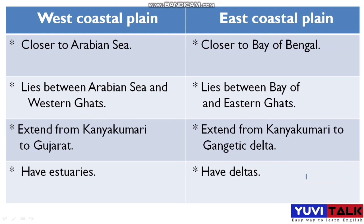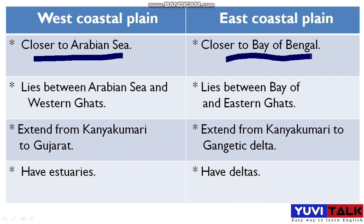The next question is: what is the difference between the West Coastal Plain and East Coastal Plain? The first difference is that the West Coastal Plains are closer to the Arabian Sea, while the East Coastal Plains are closer to the Bay of Bengal. The second difference is that the West Coastal Plain lies between the Arabian Sea and the Western Ghats.